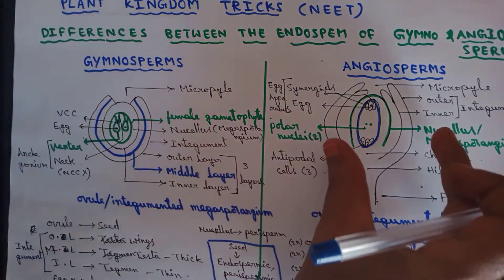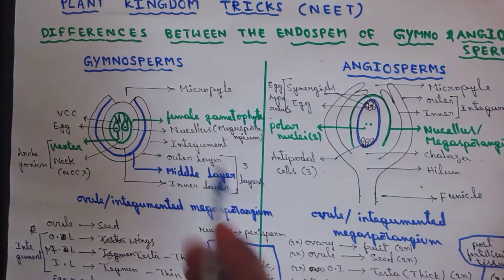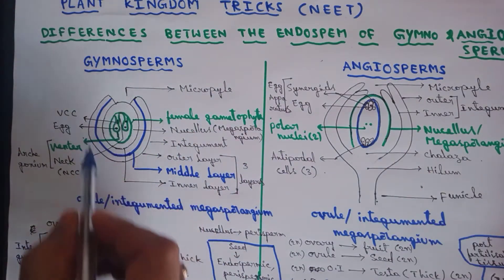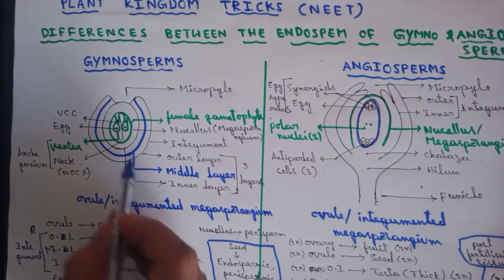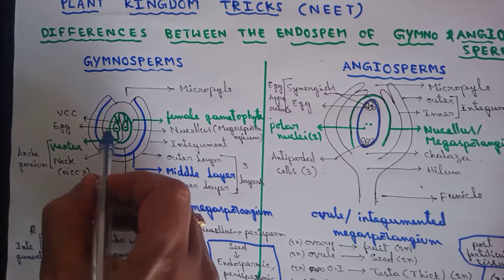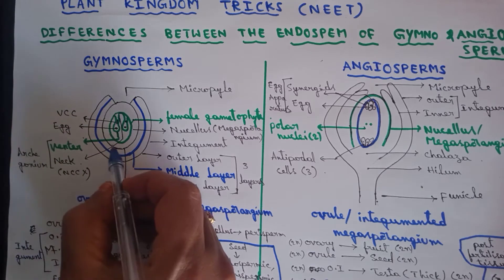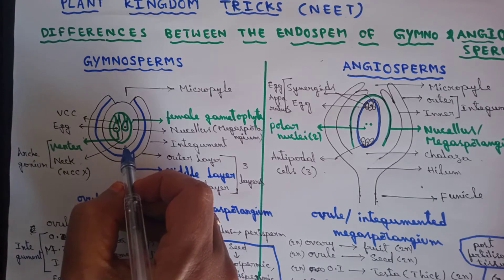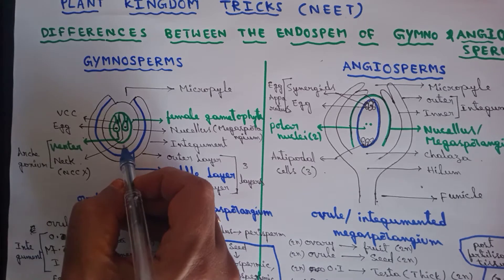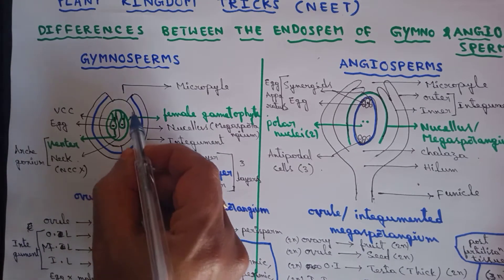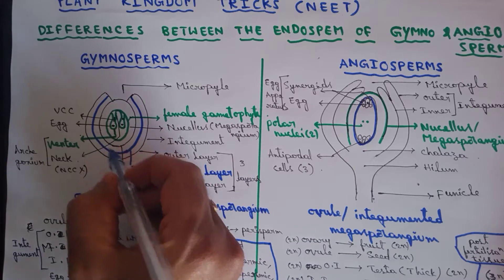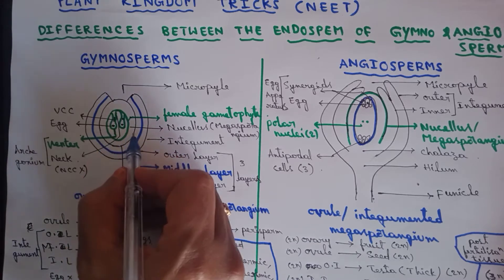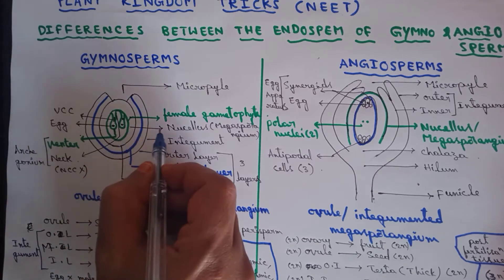This is the ovule of gymnosperms. The body of the ovule is nothing but megasporangium — integrated megasporangium is nothing but ovule. The body of the megasporangium is called nucellus.